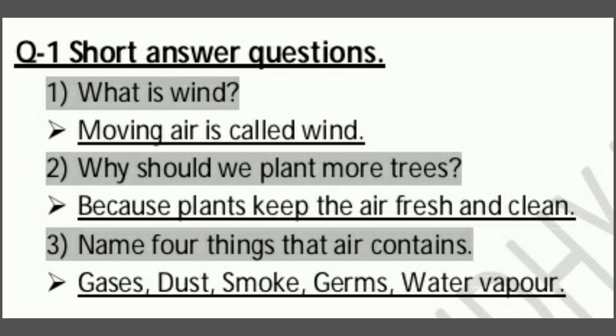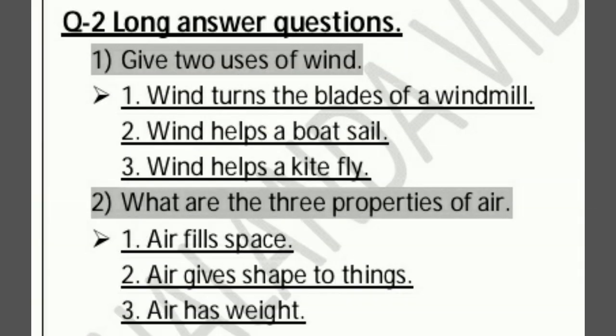Then short answer questions. First: what is wind? Moving air is called wind. Second: why should we plant more trees? Because plants keep the air fresh and clean. Third: name four things that air contains — gases, dust, smoke, germs, and water vapor. All these things are included in air.